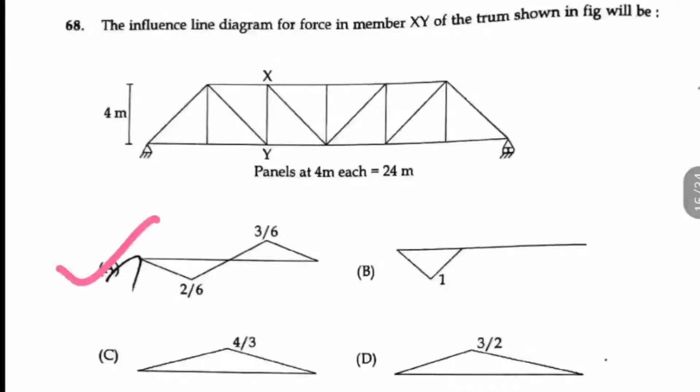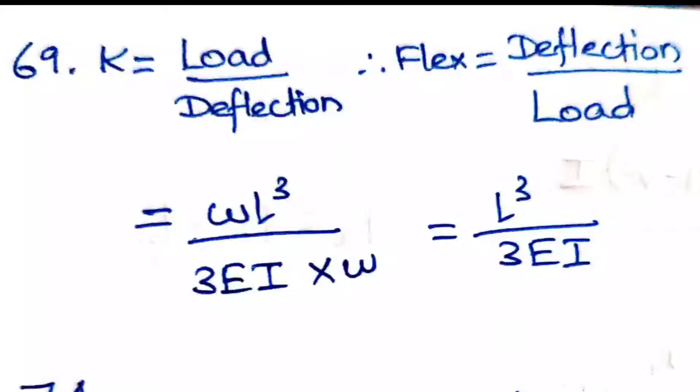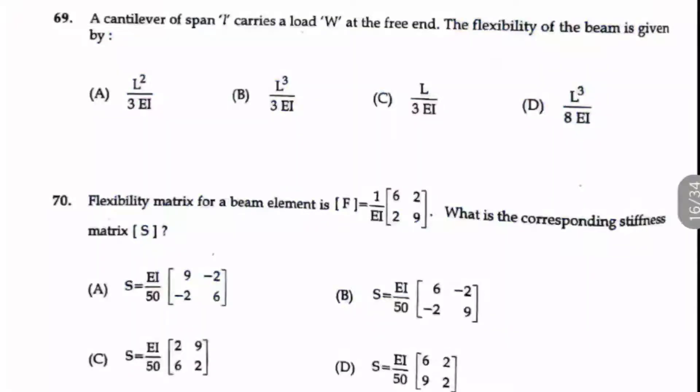Question number 69: A cantilever of span L carries a load W at the free end. The flexibility of the beam is given by? Here the stiffness formula is given as load by deflection, and it is just the inverse of the flexibility. So flexibility will be deflection by load. For the given beam, the deflection is WL³/3EI, so deflection by W gives L³/3EI. Option B is the right answer.